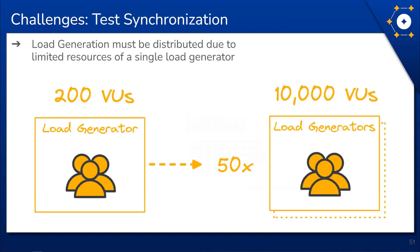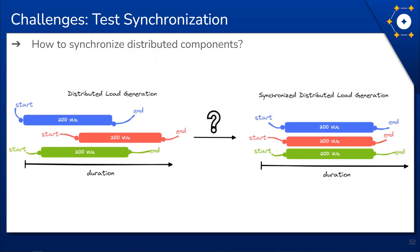The second challenge is test synchronization. During development we found that only 200 VUs can be generated by a single load generating component due to memory and CPU resource limitations. Since Constellation allows simulation of up to 10,000 VUs, the responsibility of load generation must be distributed to multiple components. However, if multiple components are involved they will execute their load generation at different points in time, meaning the overall load generation is staggered. From the perspective of the API being tested, staggered load generation means it will not experience all VUs at the same time, so measured performance will not be accurate.